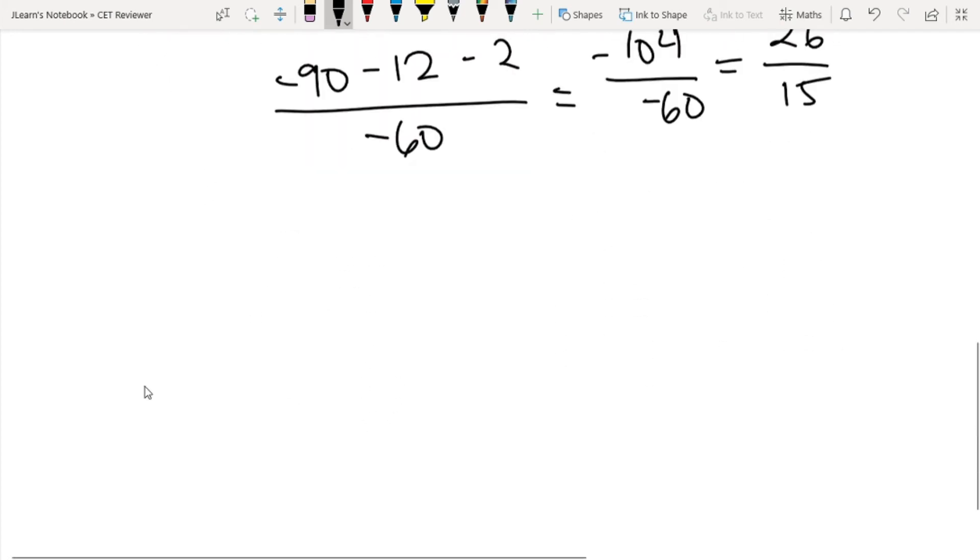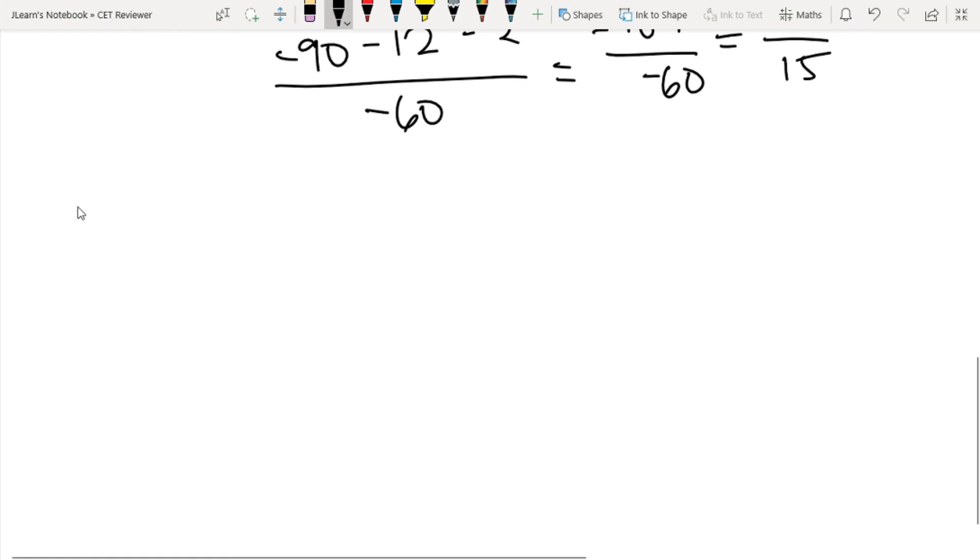For example, we know that the perimeter P of a rectangle is 2 times its length plus 2 times its width. This is a practical application. Let's say the length is equal to 12 and the width is equal to 7.